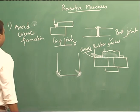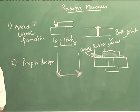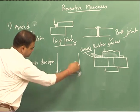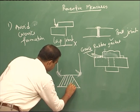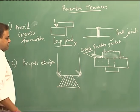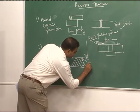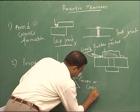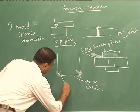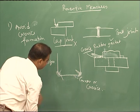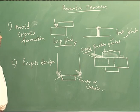The second preventive measure is proper design. For example, if a metallic structure sits on a cemented bottom with a sharp corner, that is another crevice. We can avoid it by suitably modifying that part — making it rounded — so we avoid sharp corners. Proper design is another important tool.